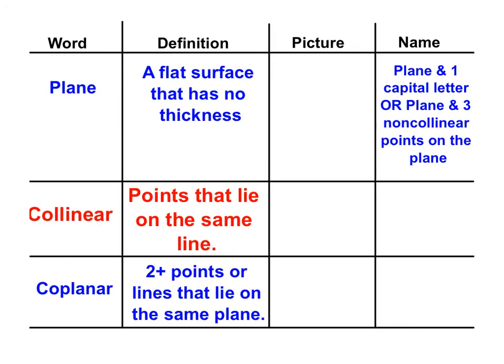The next word is plane. A plane is defined as a flat surface that has no thickness. In a picture, a plane is going to look like this. So there I drew a plane and I also added three points on my plane. Point A, point B, and point C.